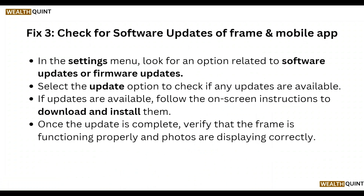Check the software update for the frame and mobile app. In the settings menu, look for the option related to software update or firmware update. Select the update option to check if any updates are available. If updates are available, follow the on-screen instructions to download and install them. Once the update is complete, verify that the frame is functioning properly and photos are displaying correctly.